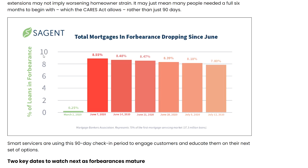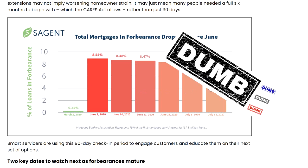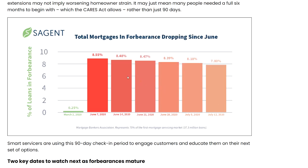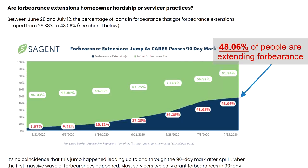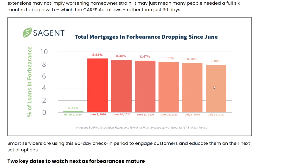It turns out there are 37.3 million loans. At 7.8%, the latest figure I looked up was 4.5 million loans in forbearance — give or take a couple hundred thousand. Think about it: if even half of these mortgages extend their forbearance, that's 2.25 million mortgages that are most likely going to extend and possibly foreclose in the future, or the homeowners will try to sell.